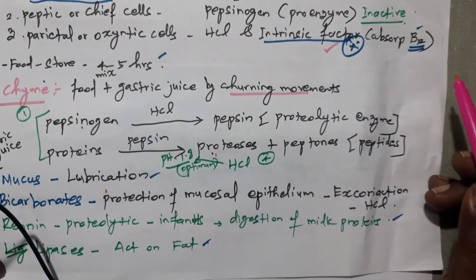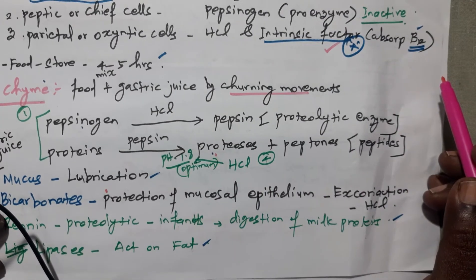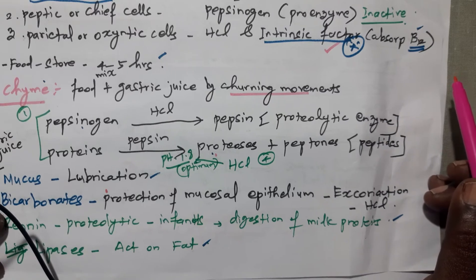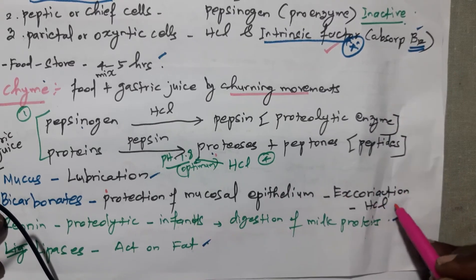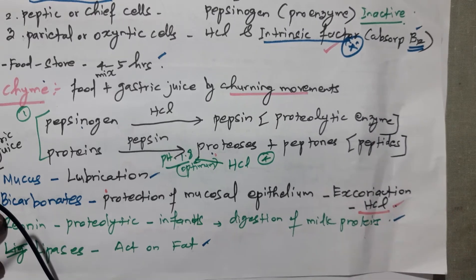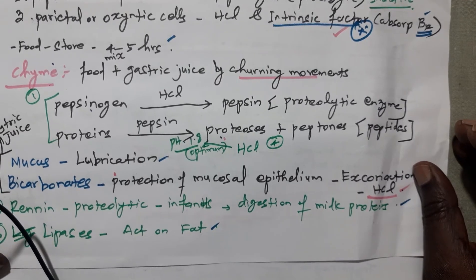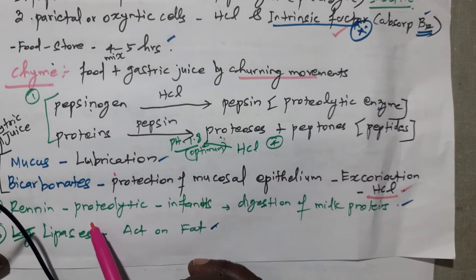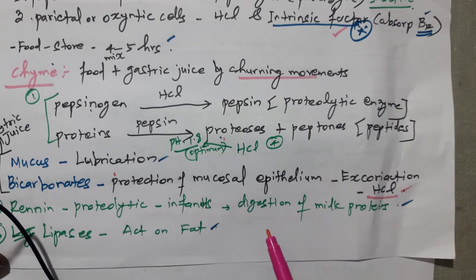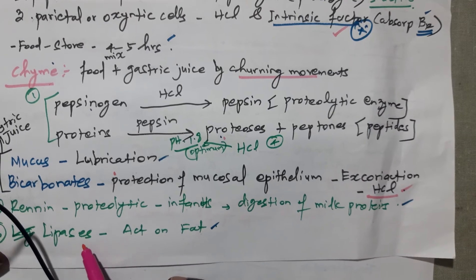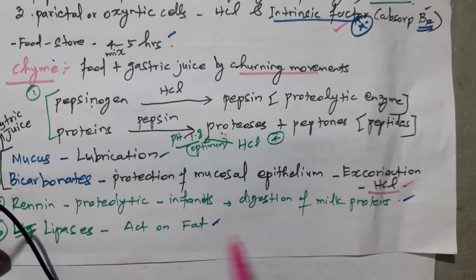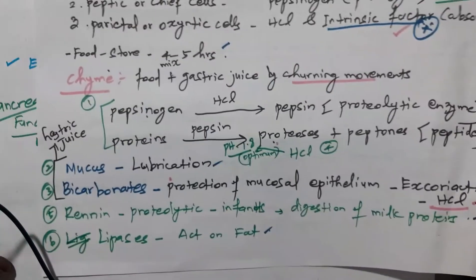Next is bicarbonate, which provides protection to the mucosal epithelium from excoriation by HCl. Next is renin, another proteolytic enzyme particularly present in infants, used for digestion of milk proteins. Next is lipase, which acts on fat.